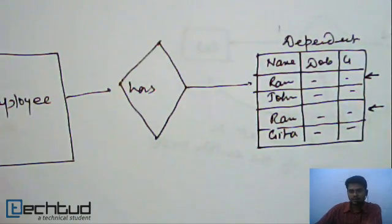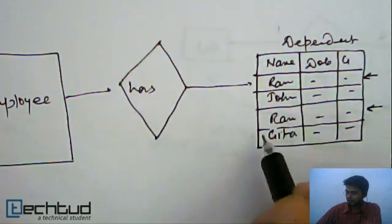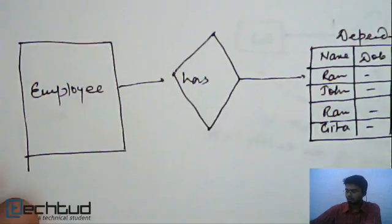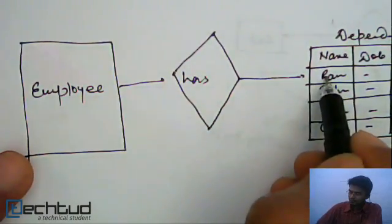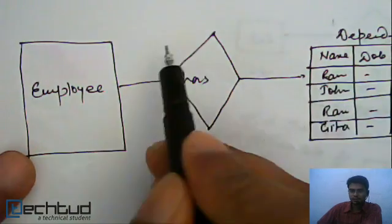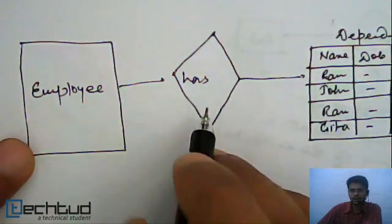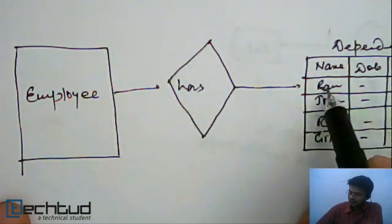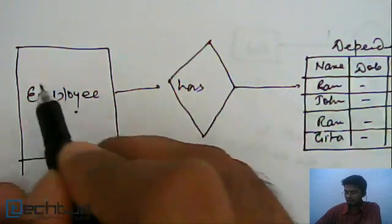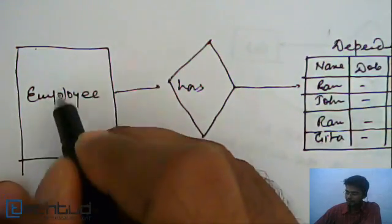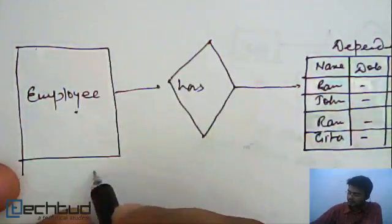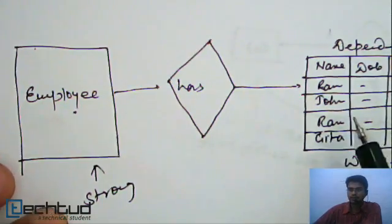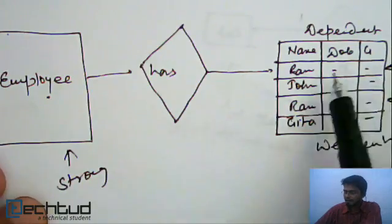But how do we identify them as different entities? We identify them through their relationship with the employee entity type. We are assuming that this Ram is the dependent of some employee A, but the other Ram is a dependent of some other employee B. So we are identifying this entity with the help of some other entity. Employee will have an employee ID as a key — that makes it a strong entity, while dependent is a weak entity, because it doesn't have any key and we identify it through a relationship.